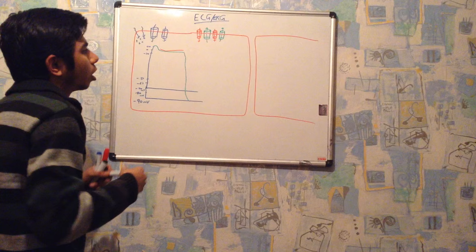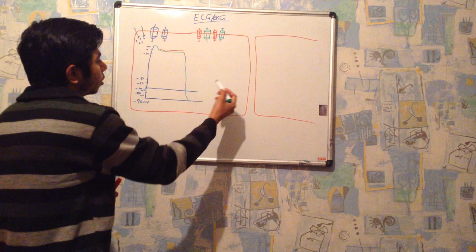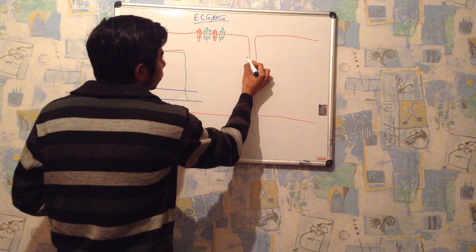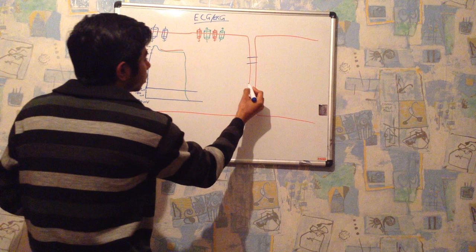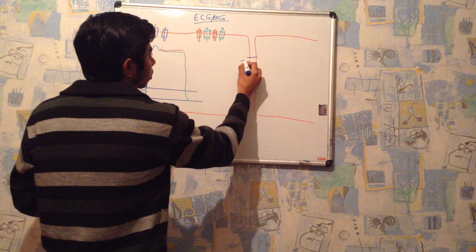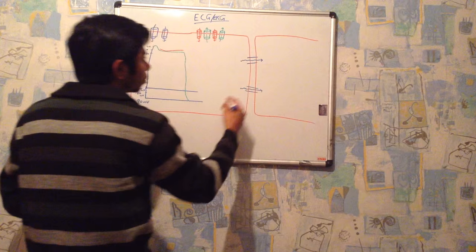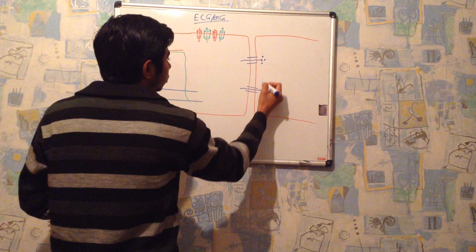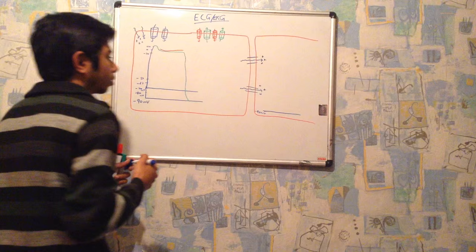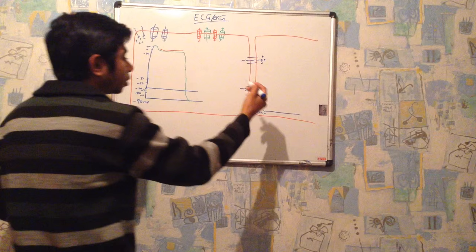Now let me tell you how this action potential is moving from this cardiomyocyte to the adjacent cardiomyocyte. We have electrical connections between these two cardiomyocytes — these are actually gap junctions, which help introduce cations from one cardiomyocyte to another. They will introduce some cations into the adjacent cardiomyocyte, which will lead its resting membrane potential from minus 90 millivolts up to the threshold potential.